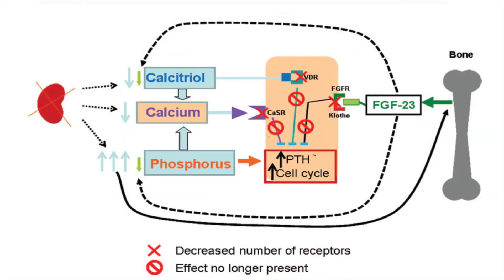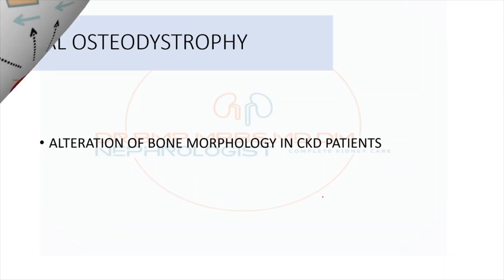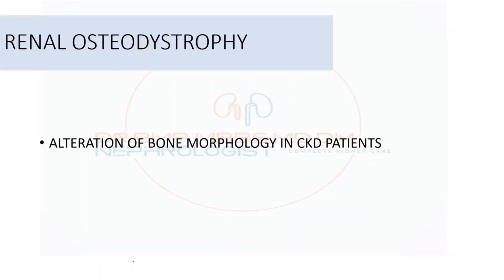In CKD, there is low calcium and low vitamin D, so it won't act on the parathyroid, won't suppress it, and parathyroid secretion increases. Because of excessive phosphorus, there is continuous secretion of FGF-23, but because of its continuous presence, the receptor stops responding. The inhibitory control on PTH is lost, so there is excessive PTH secretion leading to hyperparathyroidism. Elevated PTH causes bone erosion — the parathyroid tries to increase calcium by activating bone resorption.